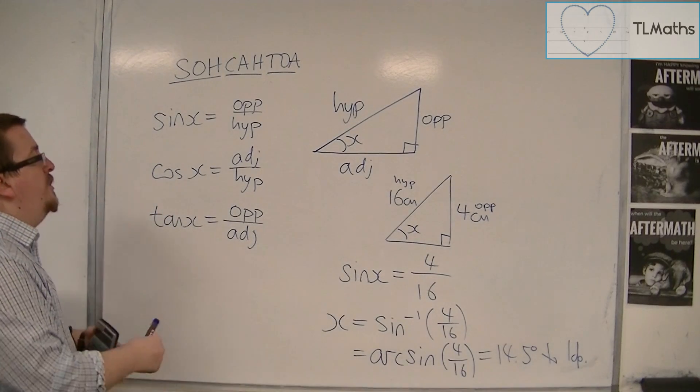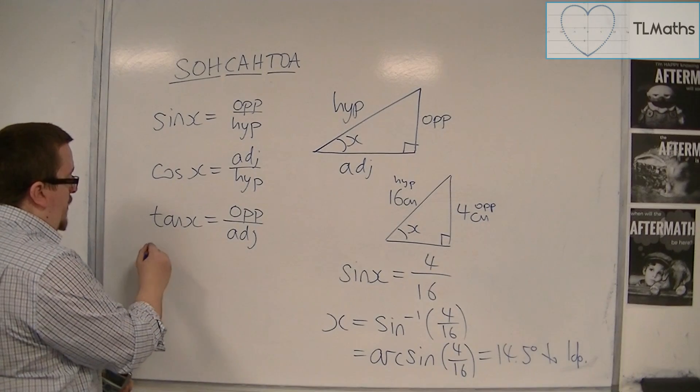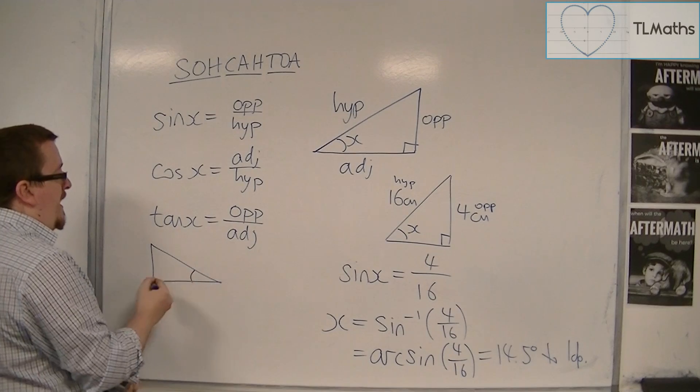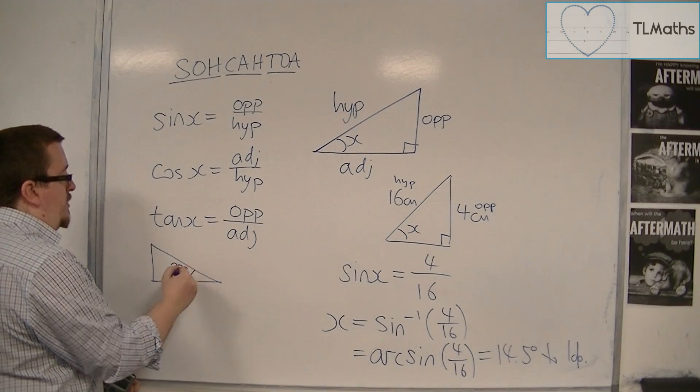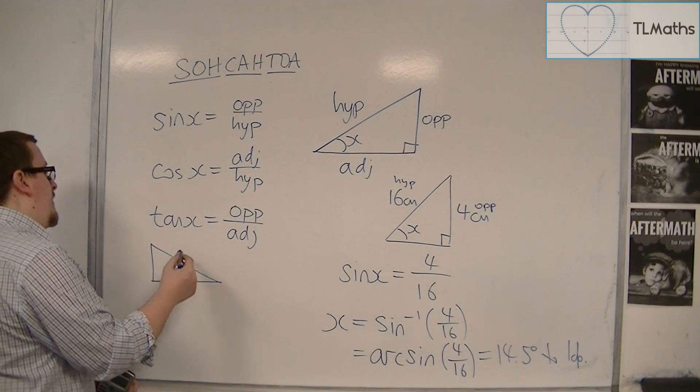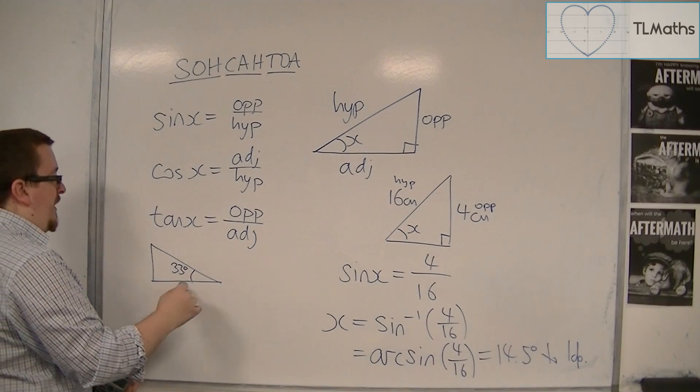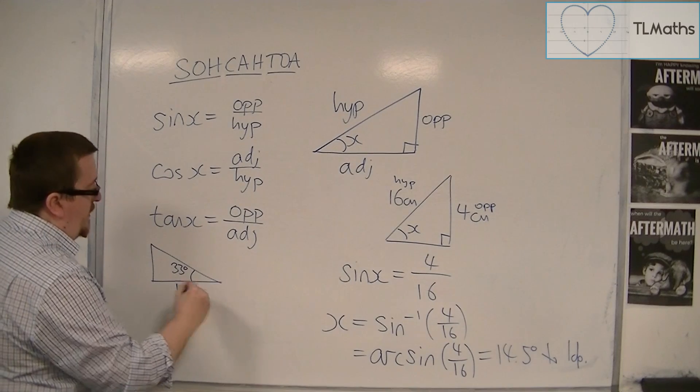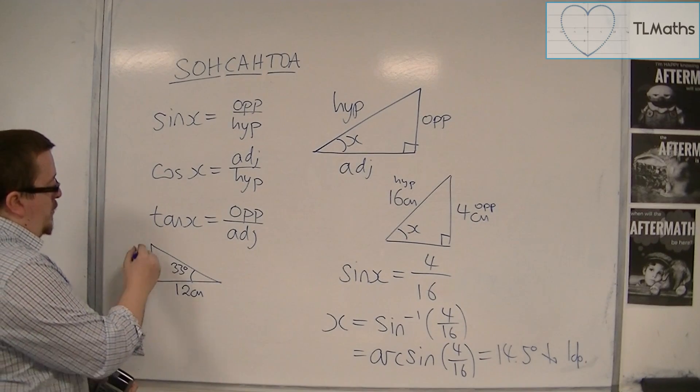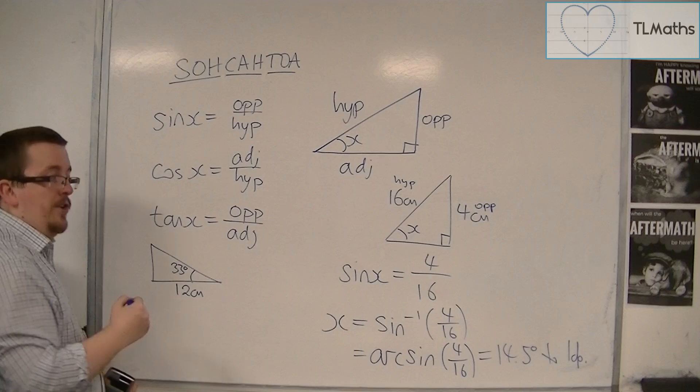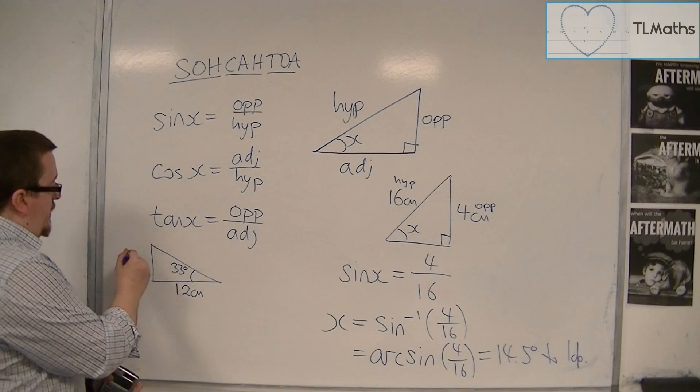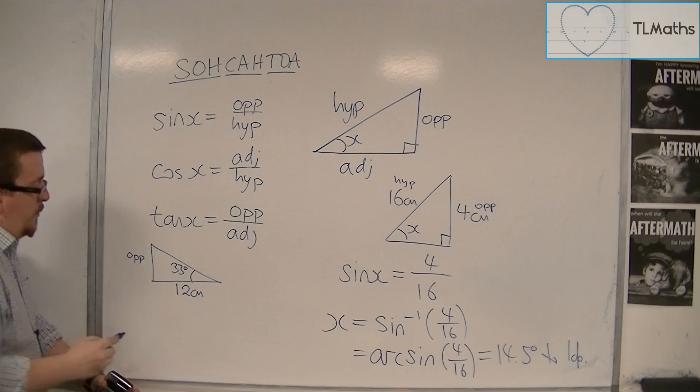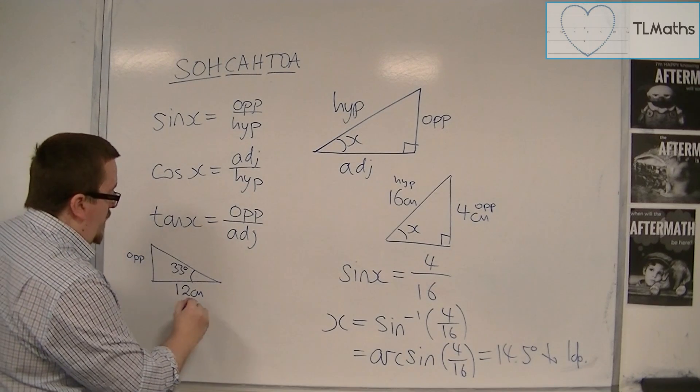We could do another example. So let's say we have a triangle where we have the angle, and that's 33 degrees. And let's say we have an adjacent given to us, and that's 12 centimetres. And I want to know the height of this triangle. So I want to know the opposite.